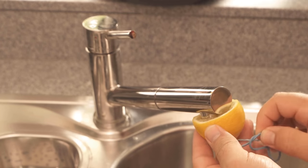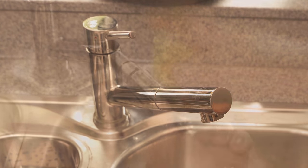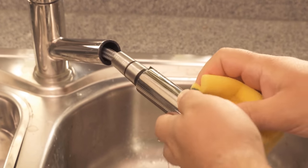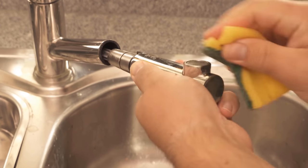When the time is up, you only have to remove the lemon and turn on the tap again, so that the rest of the citric acid disappears. Then you can wipe it with a sponge and you will see that most of the calcification and dirt should be removed.